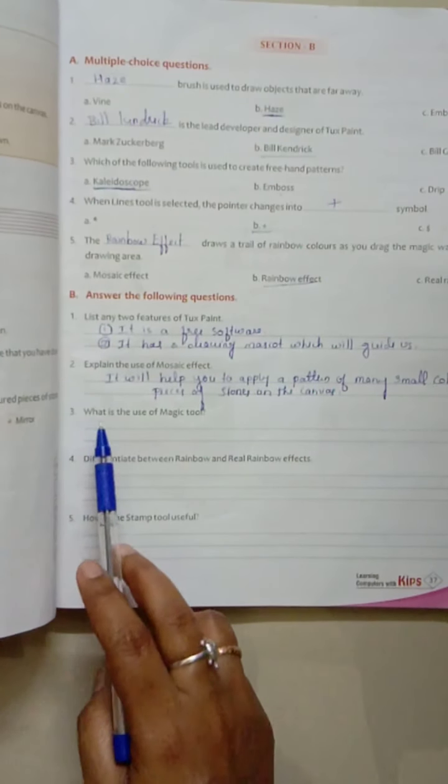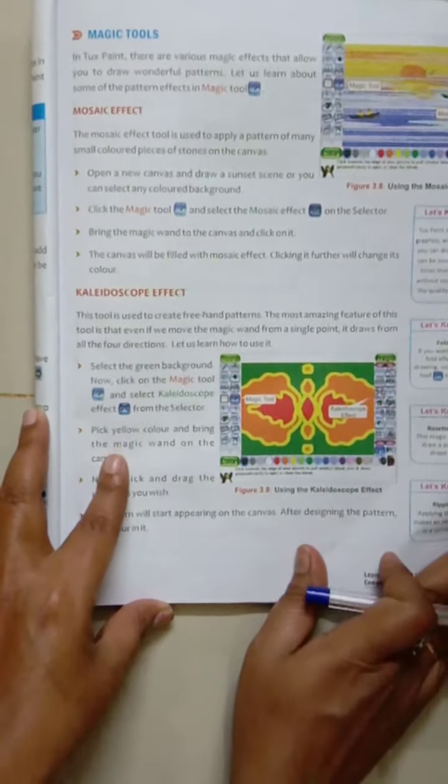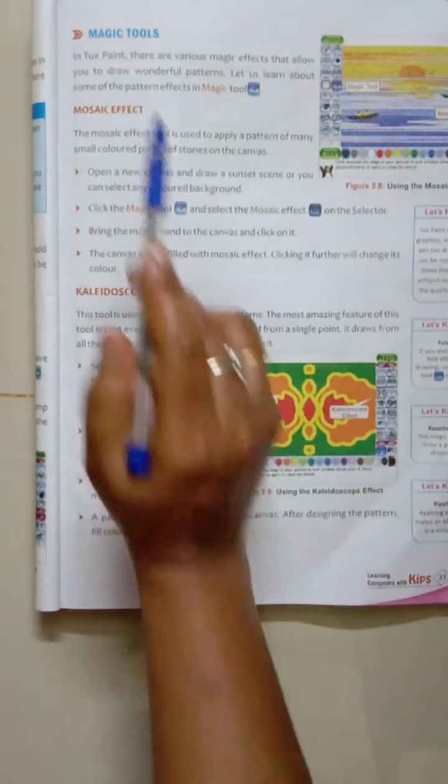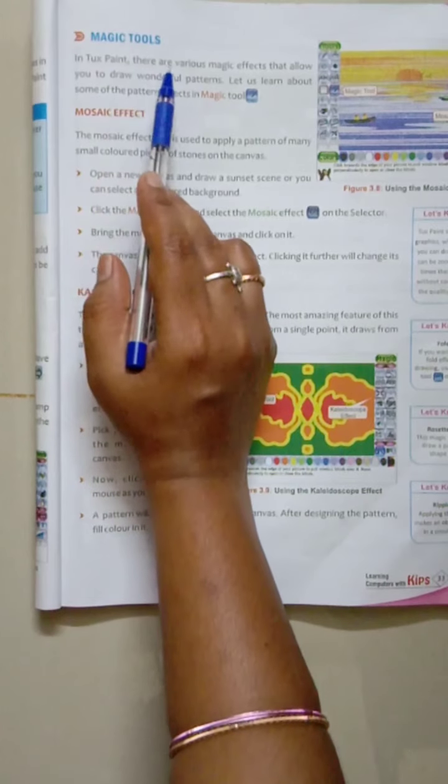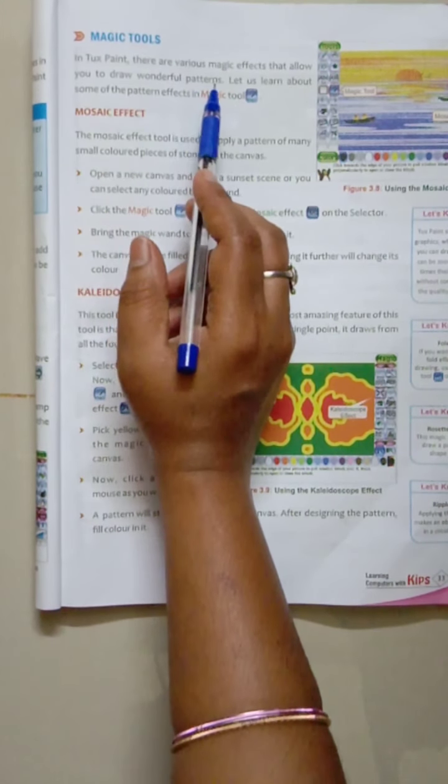Now let us go to the third one. What is the use of magic tool? Yes children. If you want to learn about the magic tool here, it is given in page number 33. In the Tux Paint, these are the various magic effects that allow you to draw a wonderful pattern.